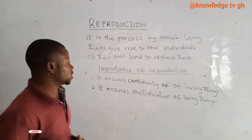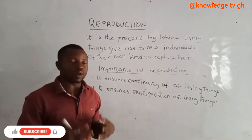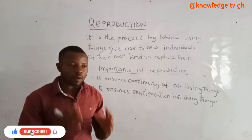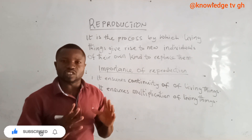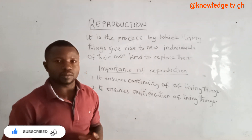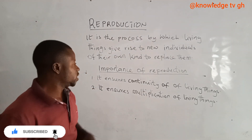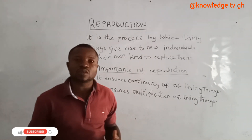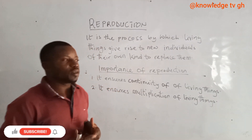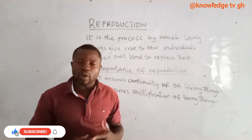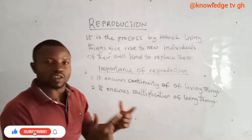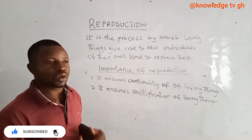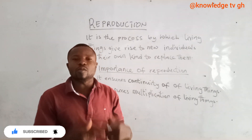Reproduction has some importance. One importance is that it ensures continuity of living things — when living things reproduce, they will continue to live forever. Number two, it ensures multiplication of living things. When the number initially is 2 and they reproduce, now it will be 3; when that one also reproduces, it will be 4. Once they reproduce, the number multiplies.